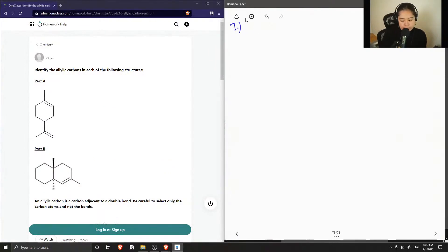Okay, so let's write down the definition of allylic carbon. It is a carbon that is adjacent to a double bond.